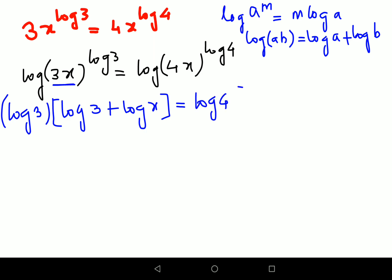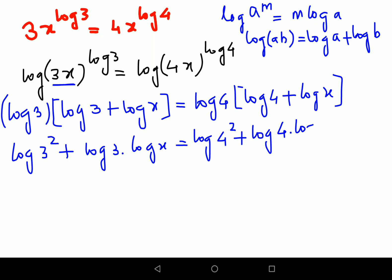Next, let's multiply this inside. So log 3 into log 3 you get log 3 square, plus log 3 into log x equals to this becomes log 4 square plus log 4 into log x.